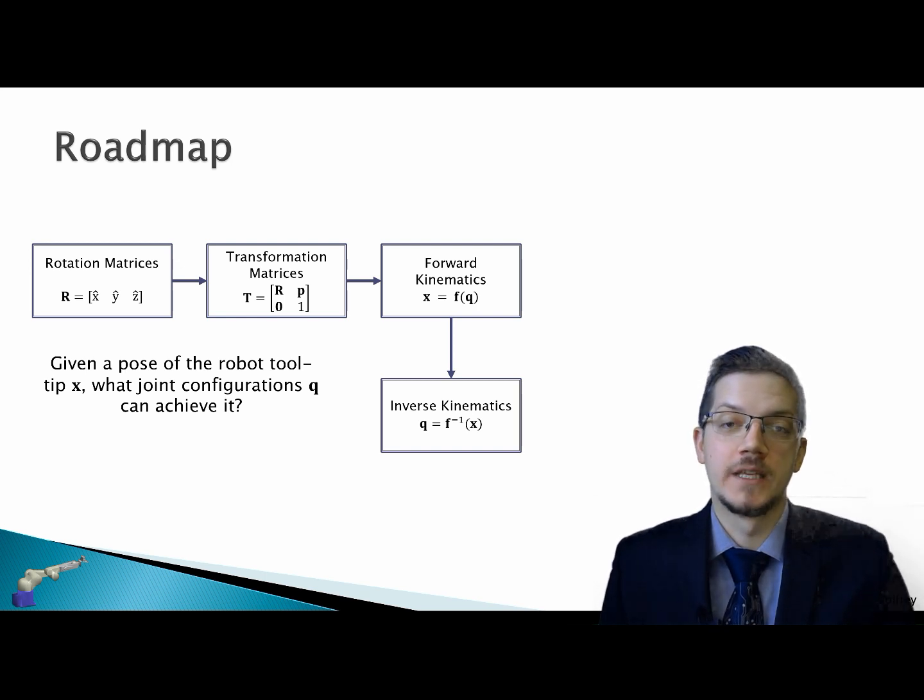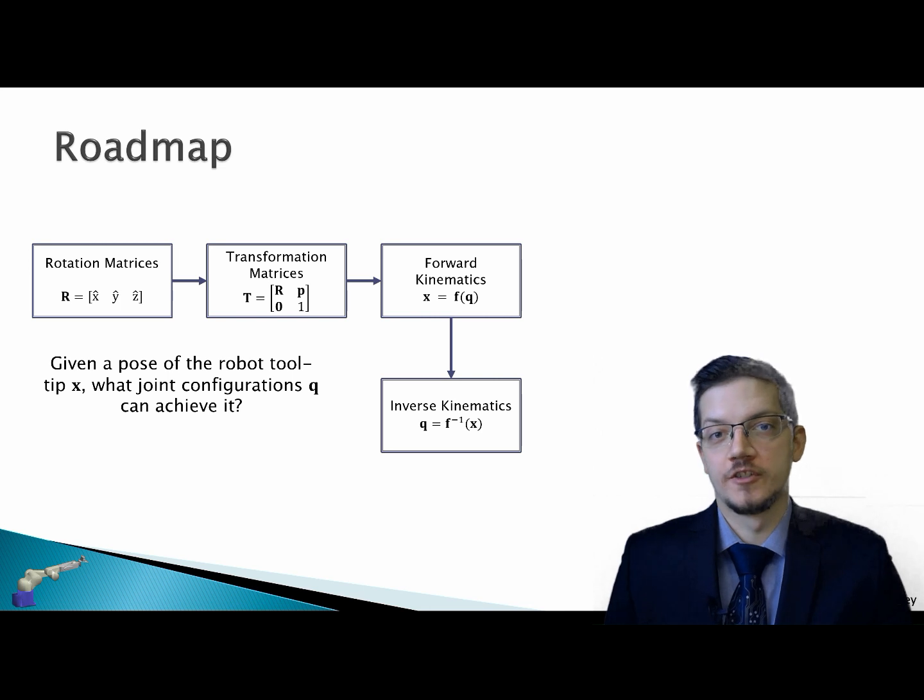Here we are on our roadmap. So given a pose of the robot tooltip X, then what joint configurations Q can achieve it?